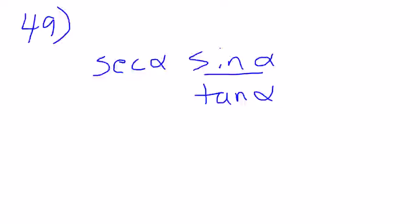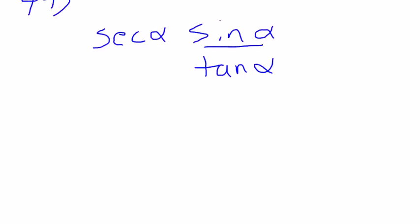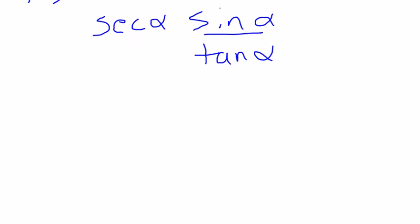All right, this is number 49. There are a couple different ways to do this problem. Let's go this way. Secant, changing to sines and cosines, is 1 over cosine.